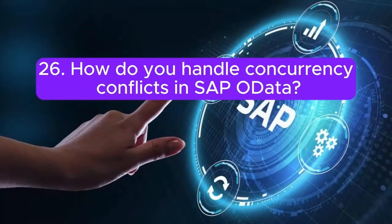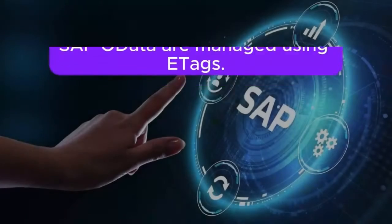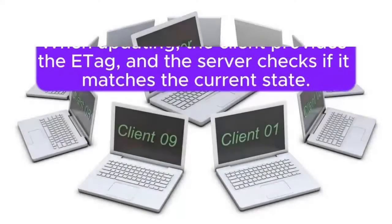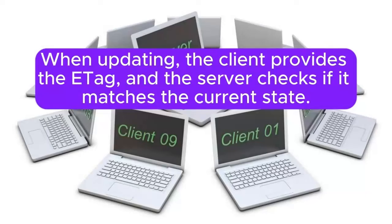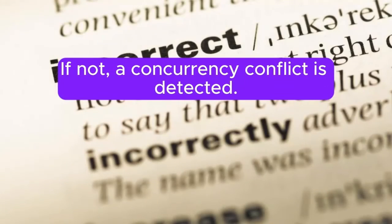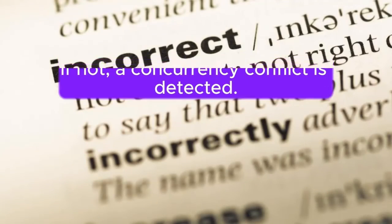Question 26: How do you handle concurrency conflicts in SAP OData? Concurrency conflicts in SAP OData are managed using ETags. When updating, the client provides the ETag, and the server checks if it matches the current state. If not, a concurrency conflict is detected.